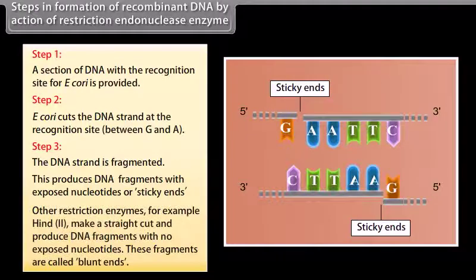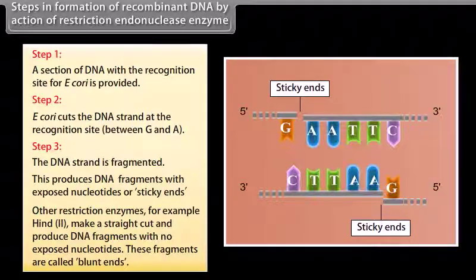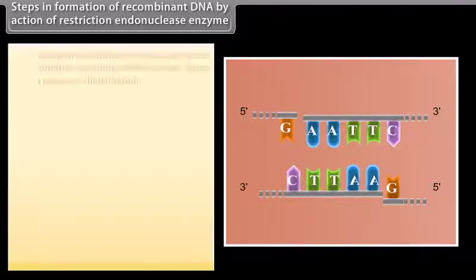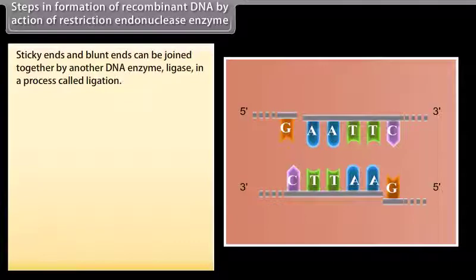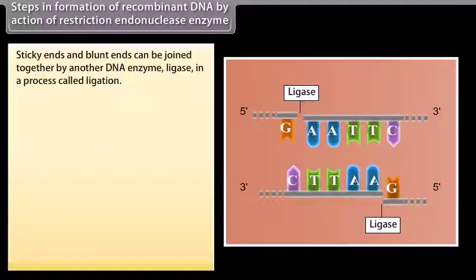Other restriction enzymes, for example, hind 2, make a straight cut and produce DNA fragments with no exposed nucleotides. These fragments are called blunt ends. Sticky ends and blunt ends can be joined together by another DNA enzyme, ligase, in a process called ligation.